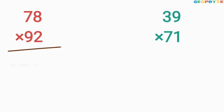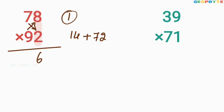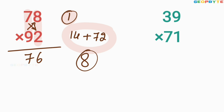78 multiplied by 92. First, multiply 8 and 2: 16. Write 6 here, 1 balance. Then cross multiplication: 7 multiplied by 2 is 14, plus 9 multiplied by 8 is 72 — equals 86, plus 1 balance is 87. Write 7 here, 8 is balance. Then 7 multiplied by 9 is 63, plus 8 is 71. So 7,176 is the value of 78 multiplied by 92.